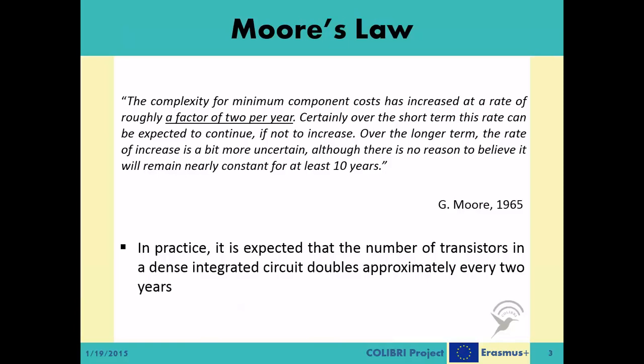Gordon E. Moore, the co-founder of the Intel Corporation, observed this trend in his 1965 paper. He stated: 'The complexity for minimum component costs has increased at a rate of roughly a factor of 2 per year. Certainly, over the short term, this rate can be expected to continue, if not to increase. Over the longer term, the rate of increase is a bit more uncertain, although there is no reason to believe it will not remain nearly constant for at least 10 years.' In short, this statement, popularly known as Moore's Law, refers to the trend that the number of transistors in a dense integrated circuit doubles approximately every 2 years.